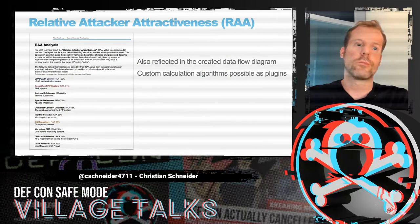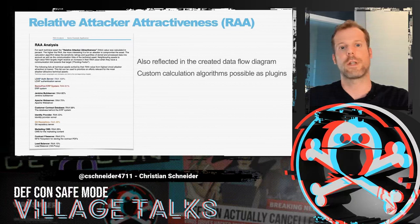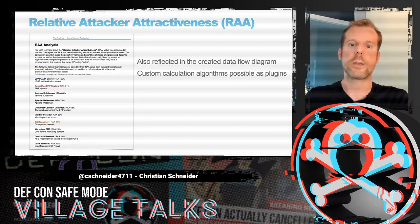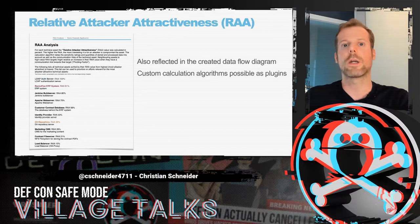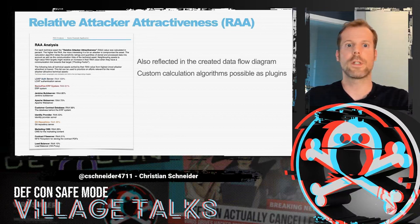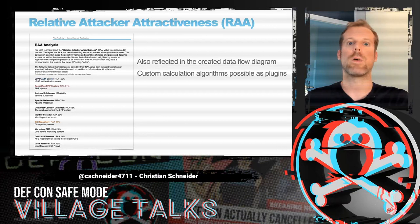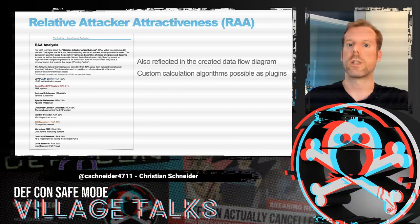ThreadGile also calculates the RAA — the Relative Attacker Attractiveness value — which is a percentage value ranging from 0 to 100%. The higher the value, the more attractive the technical asset is for attackers. There's a pluggable algorithm you can replace with your own custom one. That algorithm considers the amount and sensitivity of data on assets, the communication links, and the paths that attackers can take. If a neighboring system connects to a very high-sensitivity data-carrying system, that neighboring system is also rated a little bit higher.